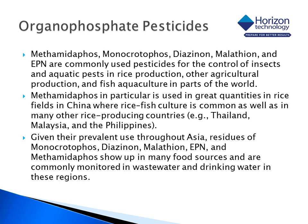Methamidaphos, monocrotaphos, diazinon, malathion, and EPN are commonly used pesticides in the control of insects and aquatic pests in many areas of agriculture throughout the world. In particular, these organophosphate pesticides are used to control rice production, agricultural production, and fish aquaculture in parts of the world.